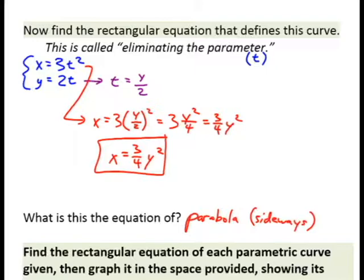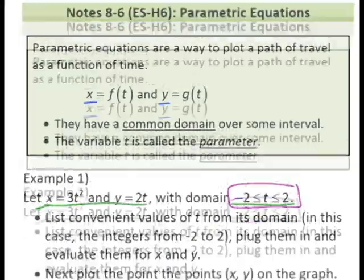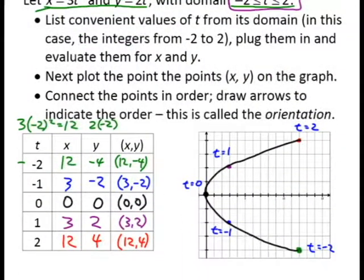Let's go back to the previous graph and draw some arrows. We're going to go in order of time. Time starts at negative 2. This particle then travels to where time is negative 1. It continues traveling until we reach the end of its domain. This is called the orientation of the graph, and we mark it with arrows just like this.